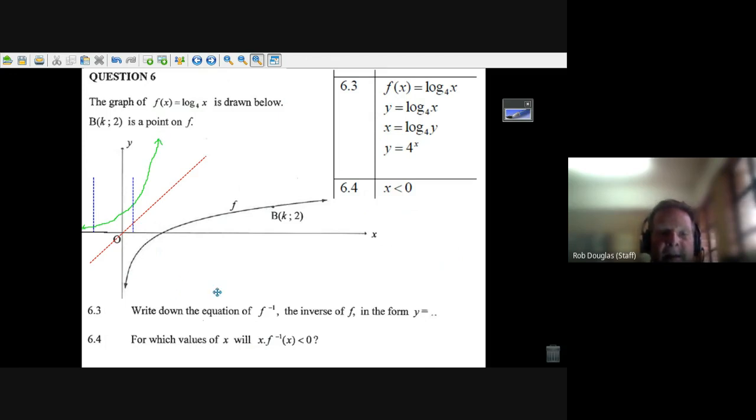Let's look at the next question. They say write down f to the minus one, the inverse of f, in the form y equals. Well, you always do it the same way: you write the function, instead of f(x) put y equals, then switch x and y. There's your first step.